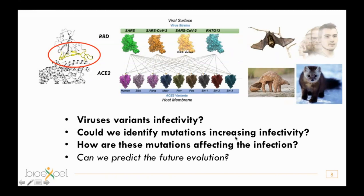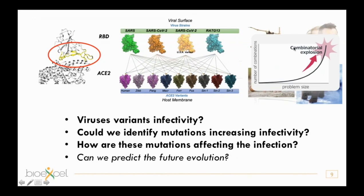We want to identify mutations that increase infectivity, understand how and where these mutations affect binding between both proteins, and ultimately predict future viral evolution — determining whether a particular mutation would increase infectivity and whether it could appear in the near future. This represents a combinatorial explosion, a very complex project requiring massive computational resources.